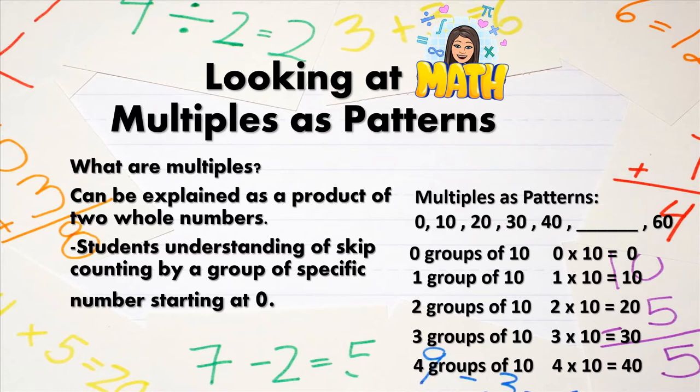And 4 groups of 10, or 4 times 10, is equal to 40. So if we were to continue this pattern, we would add another group of 10, and that would mean that we'd have our fifth group of 10, which would give us 50 in the pattern. And the same for 60. Six groups of 10 would give us 60.